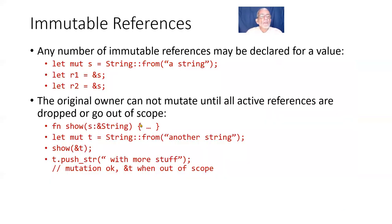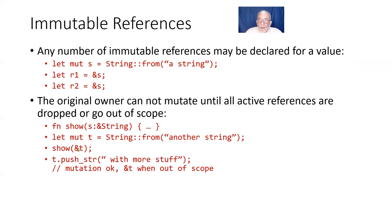Let's summarize immutable references. I can have any number of immutable references. The original owner cannot mutate until all active references are dropped or go out of scope — I can call drop(R1) and drop(R2), then mutate. Here's a function show that takes a string by reference: let mut t equals String::from another string, call show with reference to T, and now I can mutate T because the reference to T has gone out of scope. As soon as I leave that function, that reference ends its lifetime. From a user's perspective, this is simple — just ordinary pass by reference.